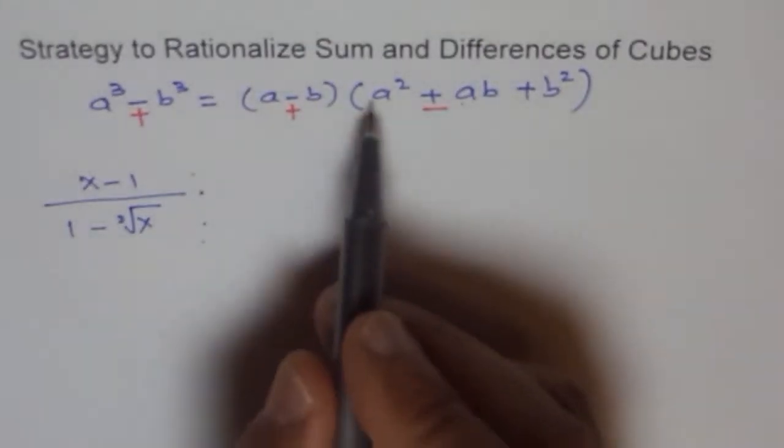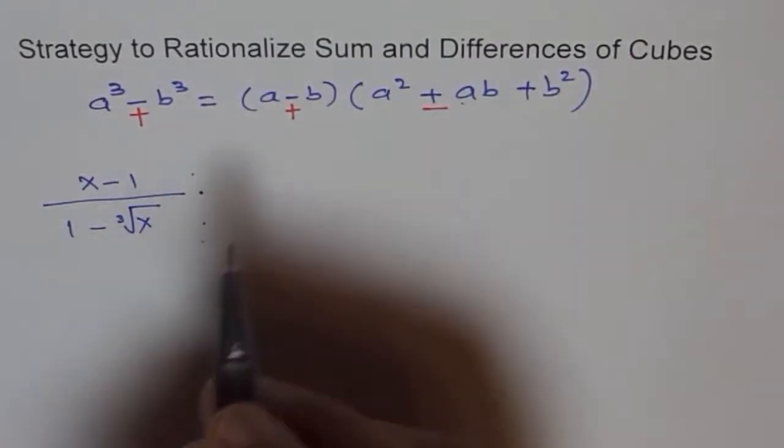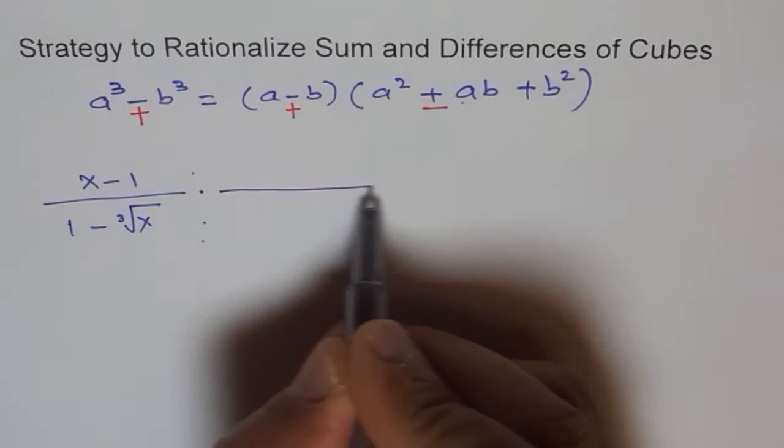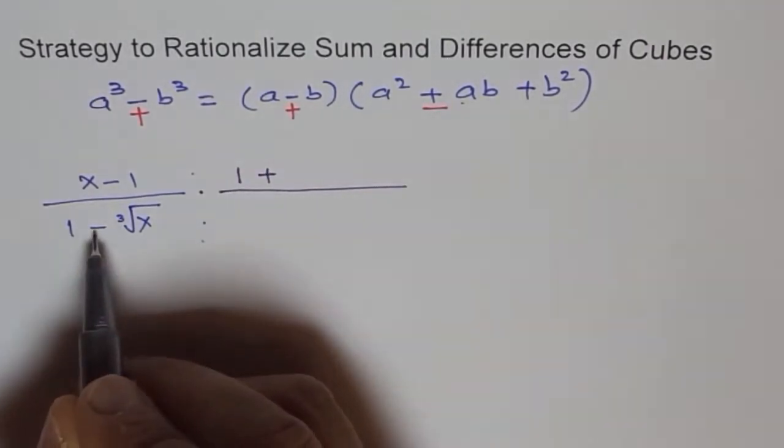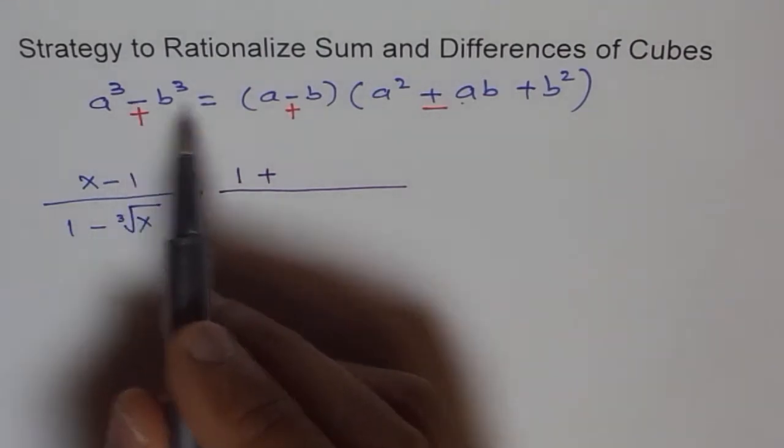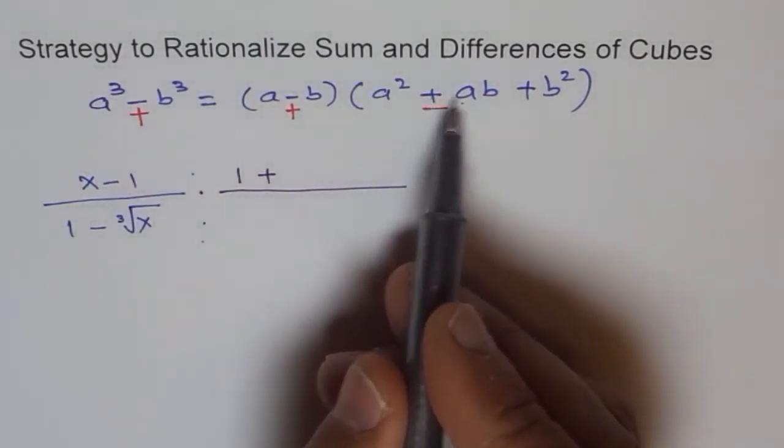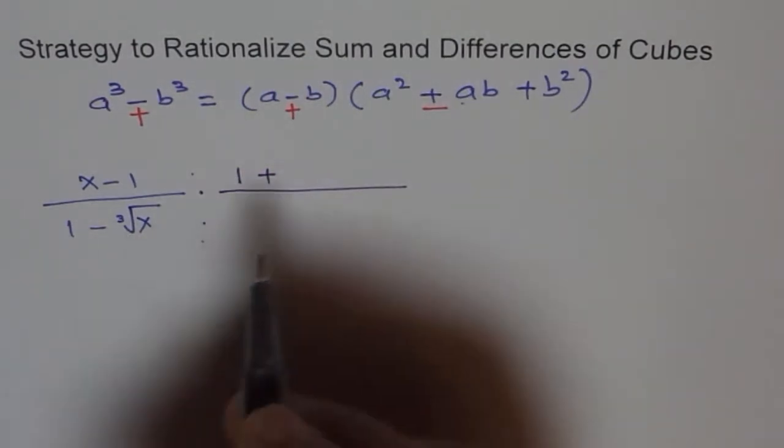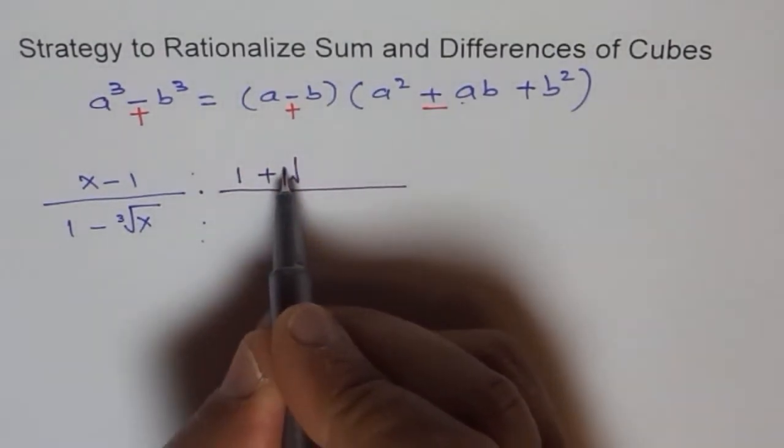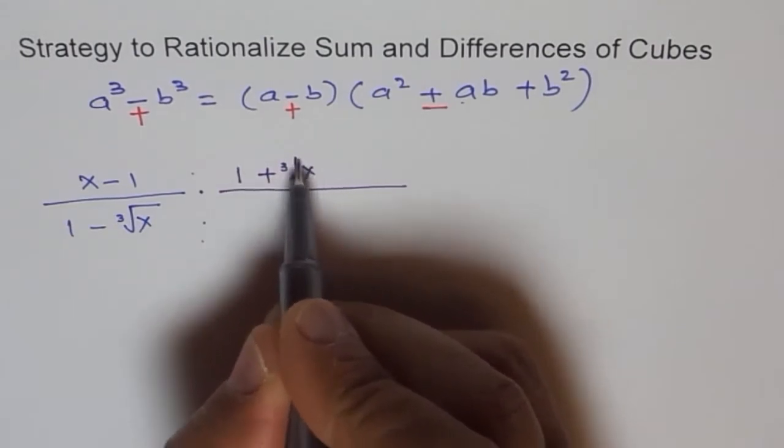So we should multiply divide by a². a² is 1². So let me write in the numerator 1. Plus, since this is minus, we are going to use plus. Plus ab. So a is 1 and b is cube root of x. So we will say cube root of x.